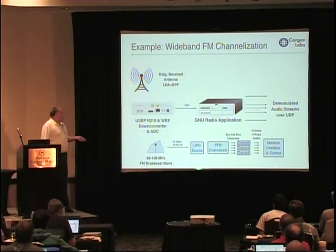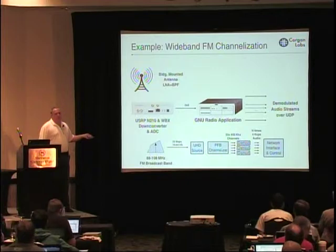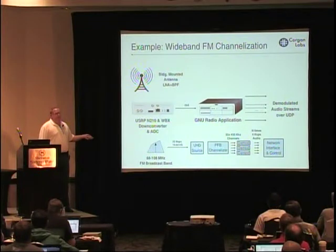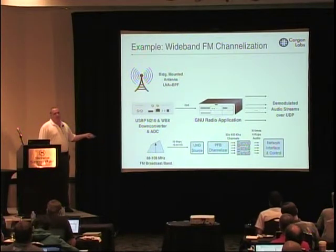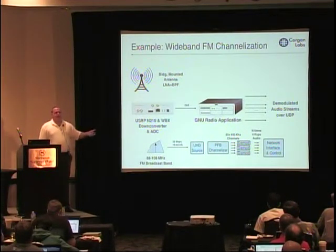This is based around a relatively new piece of code in GR Digital — our polyphase filtering channelizer. This is used to break up 20 megahertz of wideband data into 400 kilohertz by 50 channels, and then attaching FM demodulators only to the channels where you know there are radio stations.